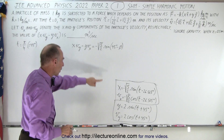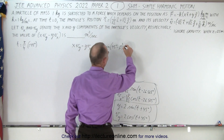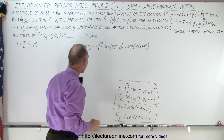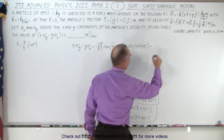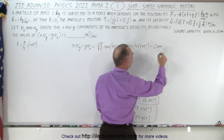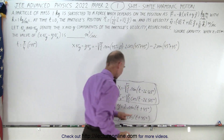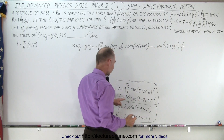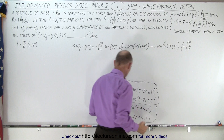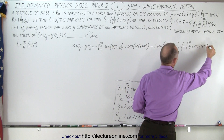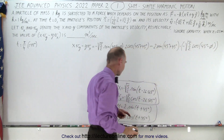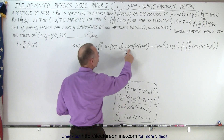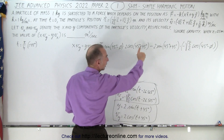We multiply that by v-sub-y, which is 2 times the cosine of 45 degrees plus 45 degrees — that's cosine of 90 degrees. Then minus y, which is 2 times the sine of 45 degrees plus 45 degrees, times v-sub-x, which is negative square root of 5 over 2 times the cosine of 45 degrees minus phi. Notice here we have the cosine of 90 degrees, which becomes zero, so this whole first term goes to zero.